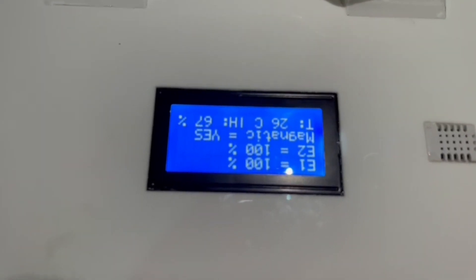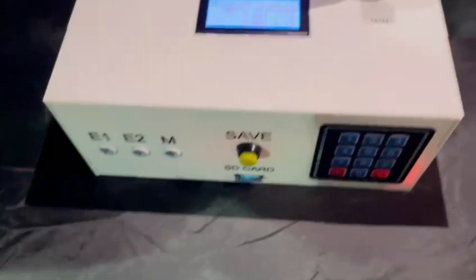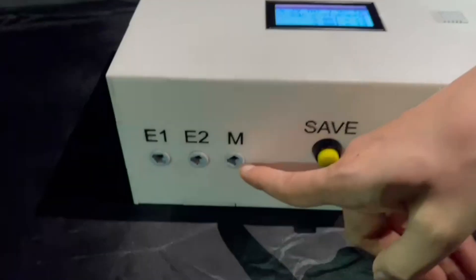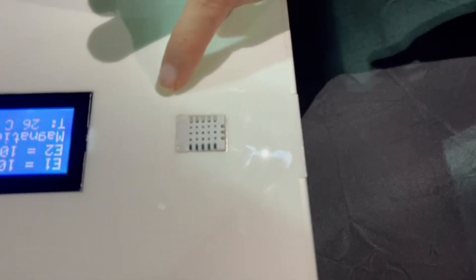The user can attach the probes with the ECG that are connected to ports E1 and E2 to measure the corrosion percentage of the surface. Also, they can attach the probes with the magnets that are connected to port M to check if corrosion exists or not.